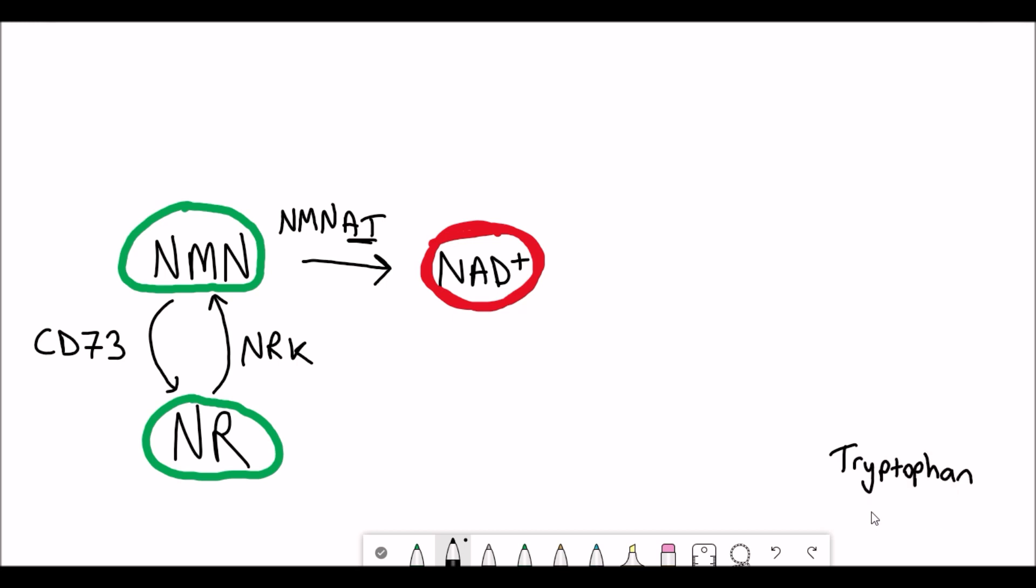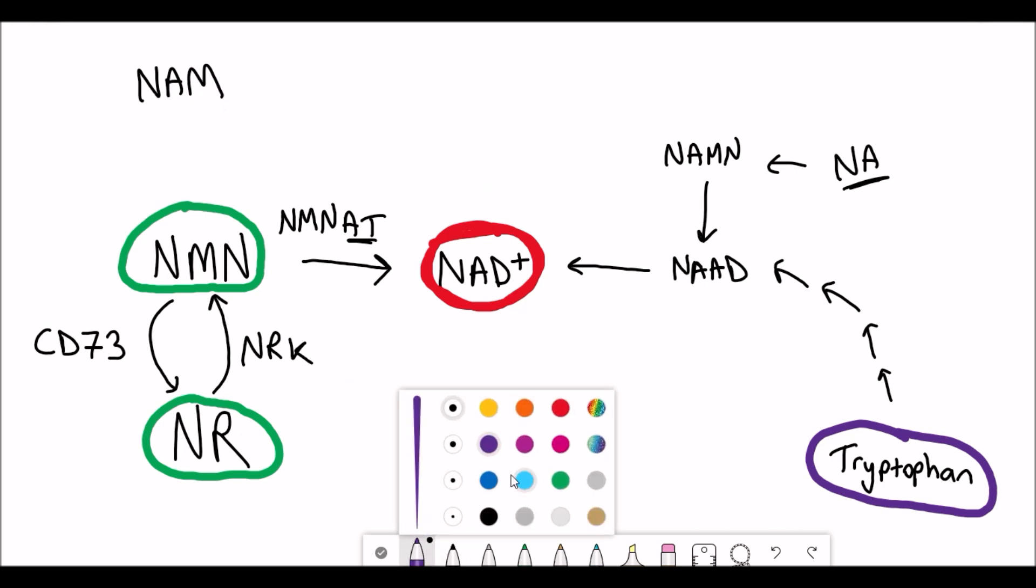What I've written out in black here are just the different enzymes. So you've got CD73, NRK, NMNAT. Don't worry about what they stand for. This is way more information than I was meant to be giving you. But my point is that there are these precursors that generate NAD plus. And you may have heard about NMN versus NR, which is better. I might do a subsequent video and look into more detail between the two because it is interesting as to what could potentially be more effective.